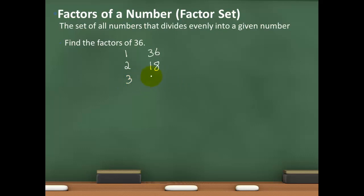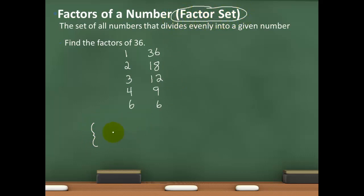Let's go to 3. If I multiply 3 and 12, I'll get 36, so 3 and 12 are factors. The same thing holds for 4 and 9. If I try 5, I can't find a number that multiplied by 5 gives me 36, so I skip 5 and go to 6. I know that 6 times 6 gives me 36. Notice that 6 is on both lists, so 7 and 8 will not be factors of 36. Once I know all the factors, I can write them as a factor set using squiggly brackets.